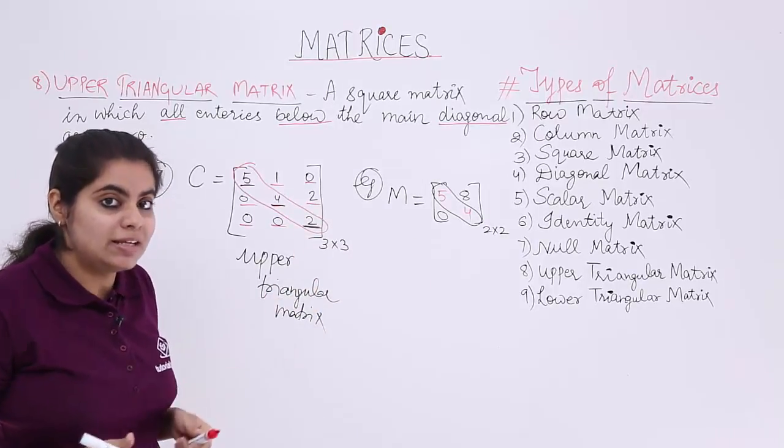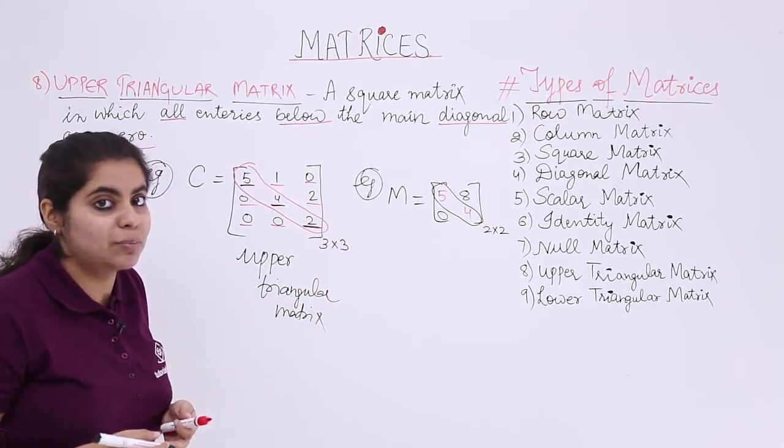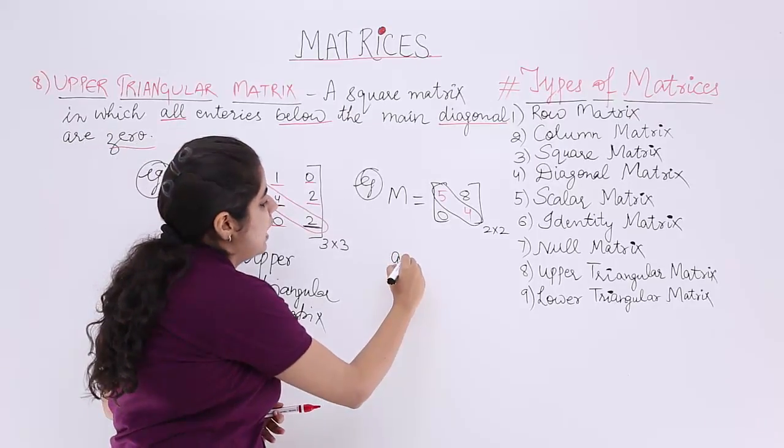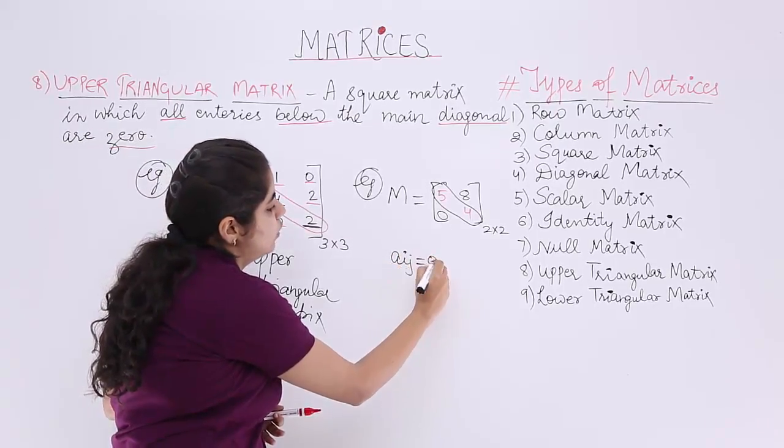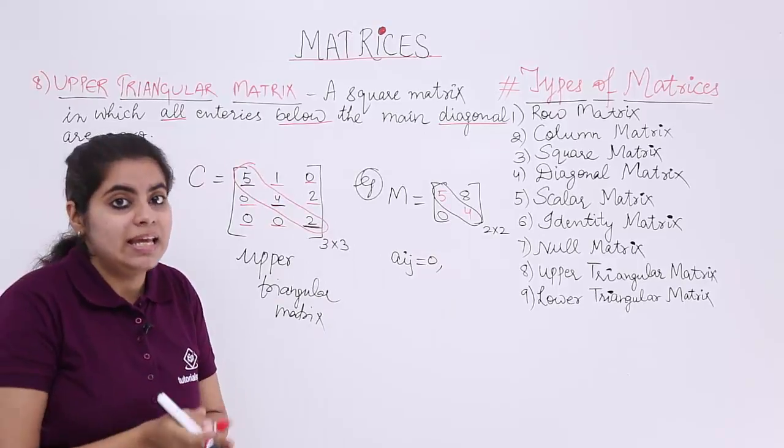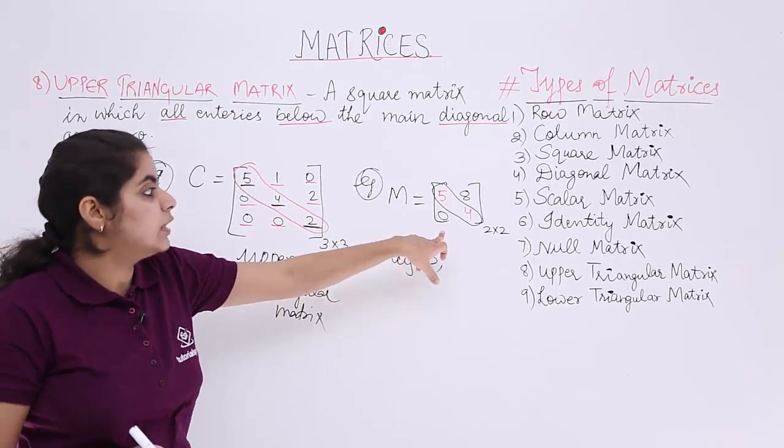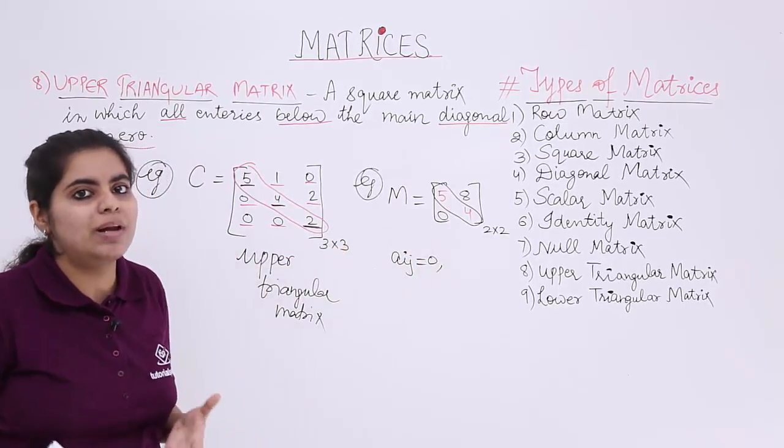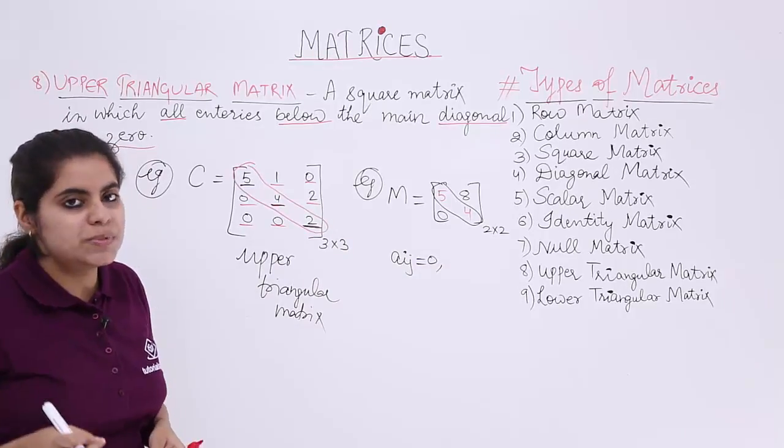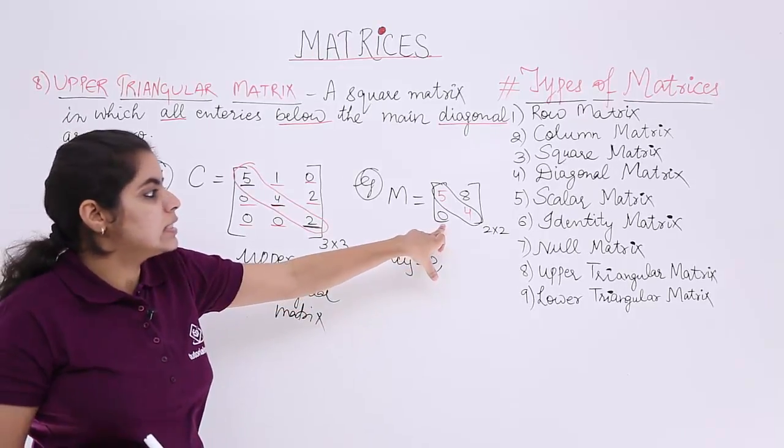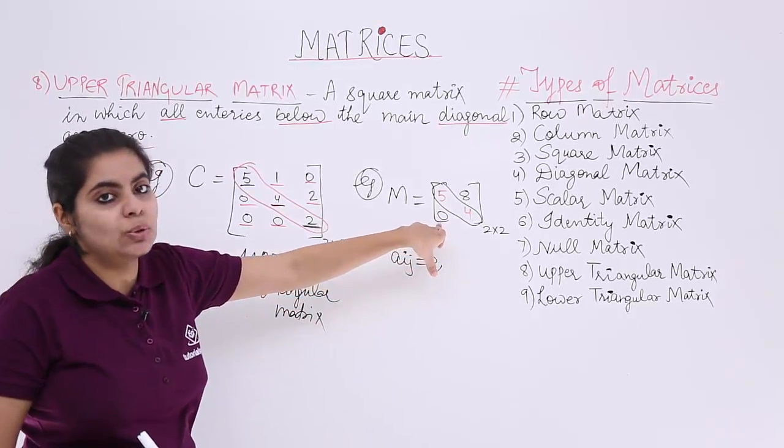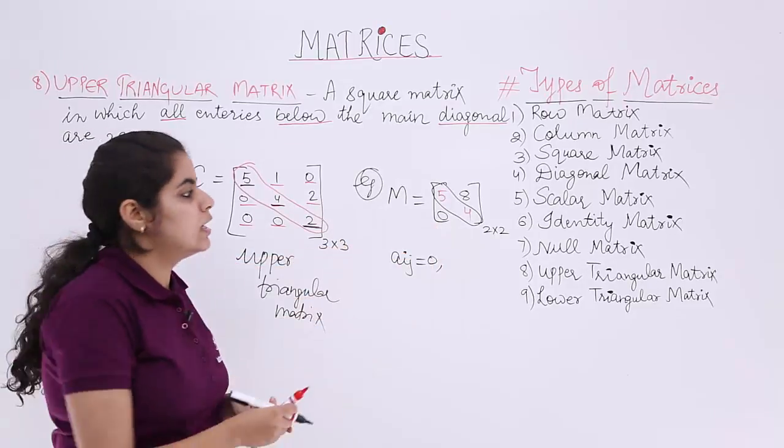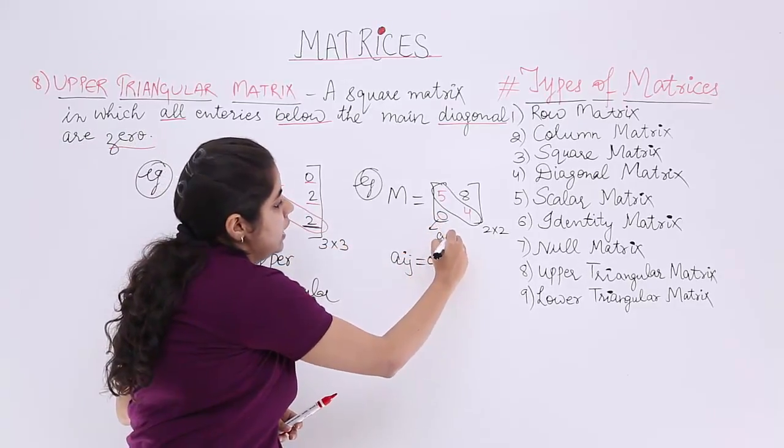Let us now write it in the form of a mathematical formulation. Here we have Aij equals 0 for the elements below the diagonal. How to write the elements below the diagonal? Observe one thing. What is the actual subscript notation of element 0? Here it is A21.